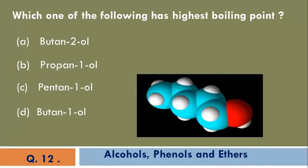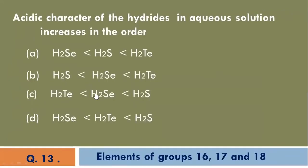Which one of the following has highest boiling point? Pentane-1-ol is the correct answer. The acidity character of hydrides in aqueous solution increases in the order. The B option is the correct increasing order.